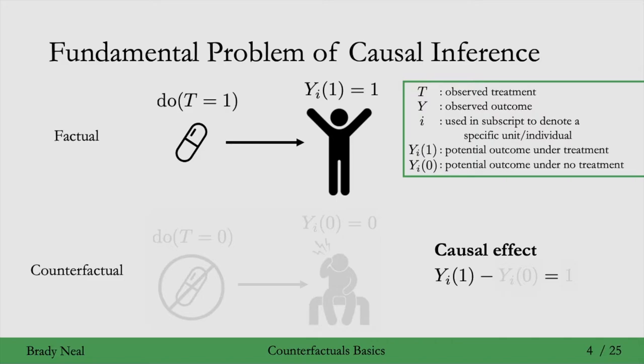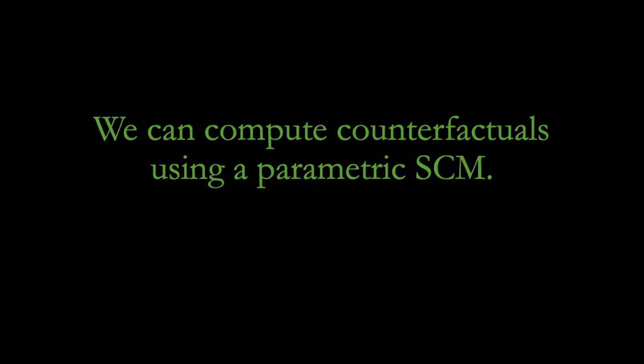We introduced this fundamental problem back in week 2 when we were talking about potential outcomes, but we hadn't seen structural causal models yet. It turns out that with structural causal models we can compute the counterfactuals if we have a parametric structural causal model — in other words, if we know the specific functional form of the structural equations.